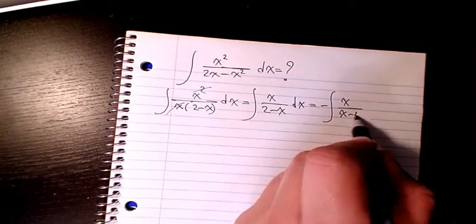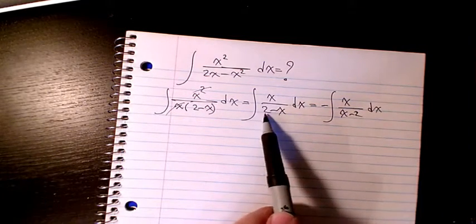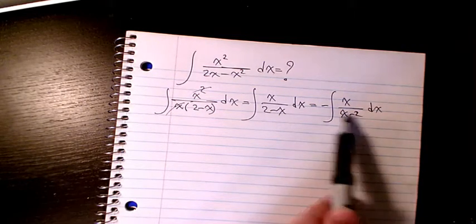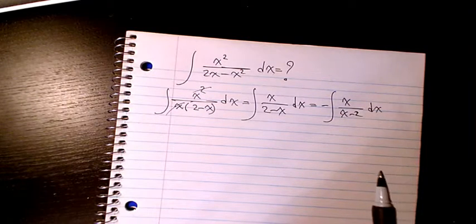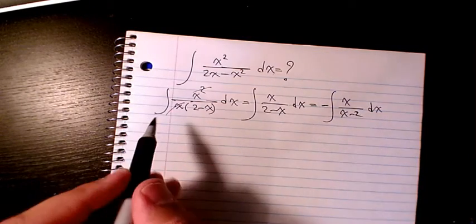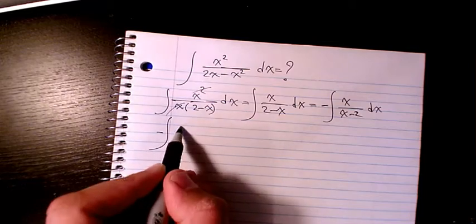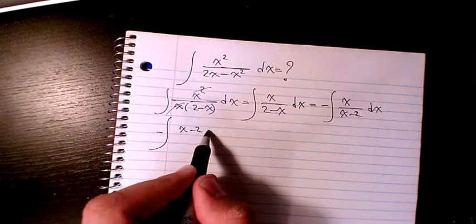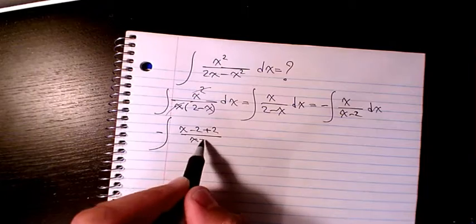Or I can write negative x over (x - 2) dx. Why? Because I change (2 - x) to (x - 2) and then I multiply by negative 1. Then instead of x I can write (x - 2) plus 2 over (x - 2) dx.